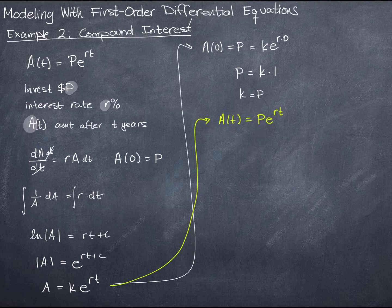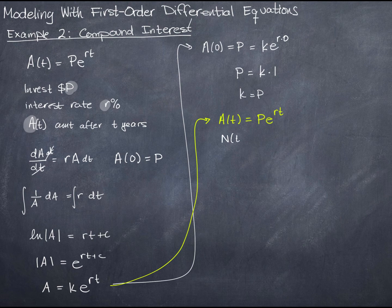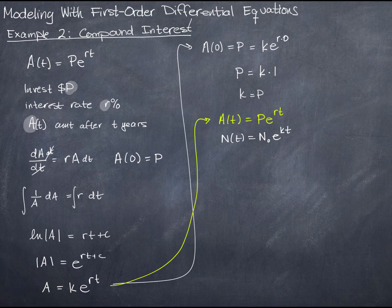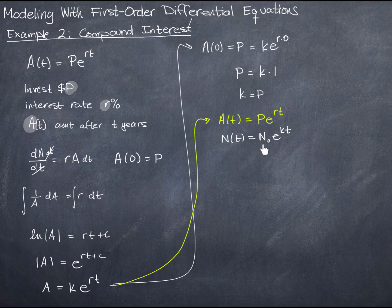When I look at this, I also see, for example, N of t equals N sub zero e to the kt, which is a biology application. This says the number of individuals in a population will be equal to the number of individuals at the start times e to the kt, where k is the growth rate.